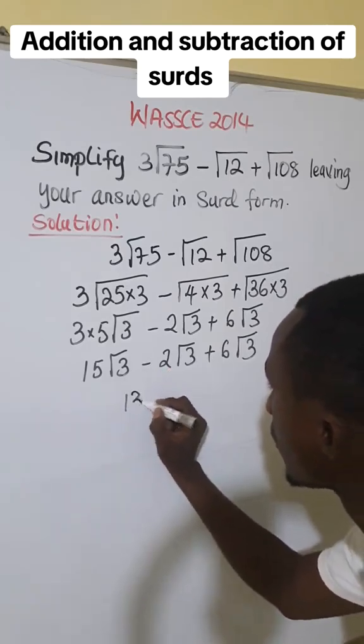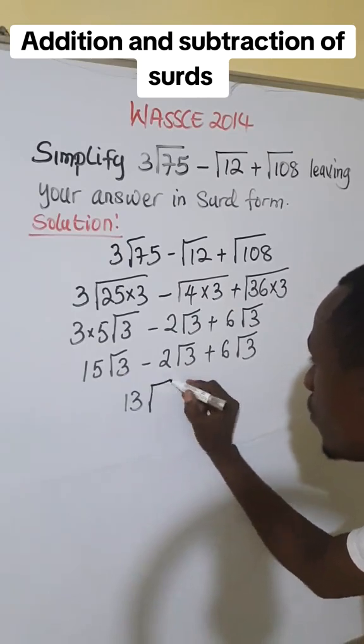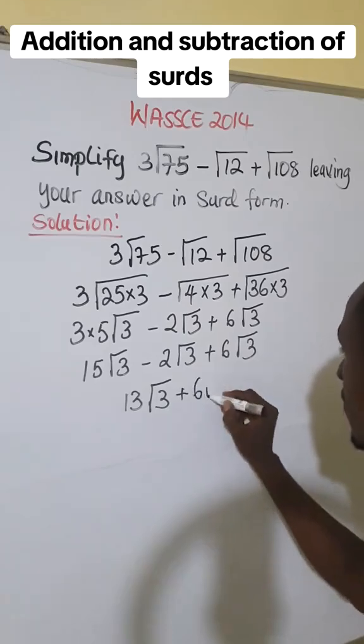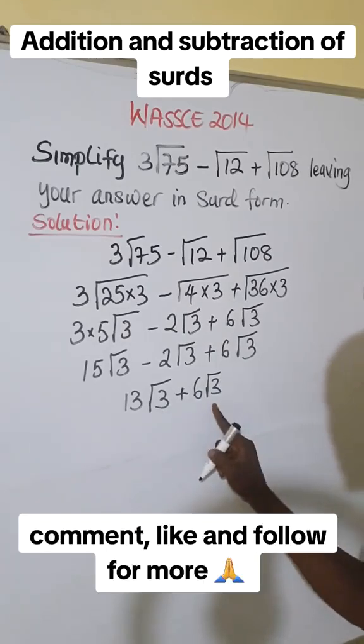15 minus 2 is 13. So this is going to give us 13√3 plus 6√3. We also simplify because the roots are the same.